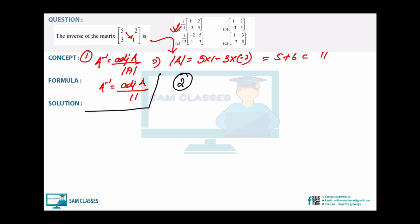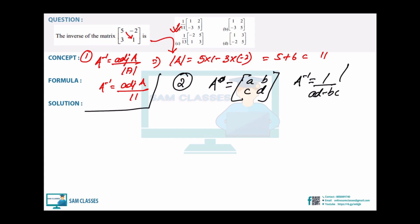There's another method for the inverse. For a 2×2 matrix A = [[a,b],[c,d]], directly: A⁻¹ = 1/(ad - bc) × [[d,-b],[-c,a]]. So we interchange the leading diagonal elements and multiply the non-leading diagonal elements by -1.